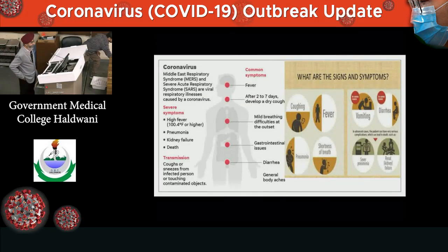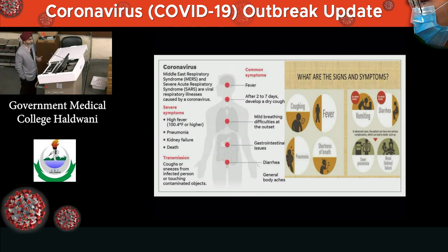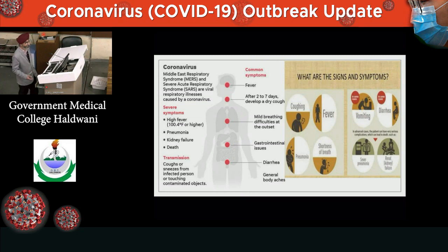Clinical features: the patient usually has upper respiratory tract symptoms. The patient presents with fever, which may last 2 to 7 days, and may develop a dry cough. There may be difficulty in breathing at the outset, along with diarrhea, vomiting, GI issues, and generalized body ache. The patient may have non-specific features like those seen in simple viral fever — not very specific features.